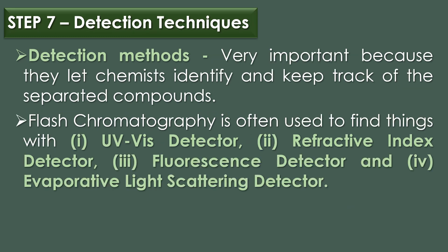Step seven is detection techniques. Detection methods are very important in flash chromatography because they allow chemists to identify and track their separated compounds. Since automation has become more common, different detectors have been added to flash chromatography devices. Common detectors include UV-Visible Detector, Refractive Index Detector, Fluorescence Detector, and Evaporative Light Scattering Detector.